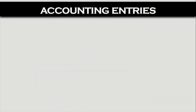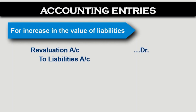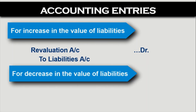Then let's see for liabilities. The concept is the same; just debits and credits are different. For the value of a liability increasing — liability has credit balance, to increase credit we credit it — so credit the liabilities account and debit the revaluation account. We can also say that when liability increases, it means our expenses or losses are increasing; all expenses and losses are debited, that's why the revaluation account is debited. For decrease in the value of liabilities — liability has credit balance, to decrease credit we debit it — so debit the liabilities account and, as it is a gain for us, credit the revaluation account.